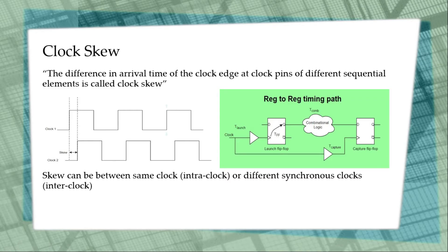Clock skew can be between the same clock at different pins of different sequential elements — this is called intra-clock skew. Clock skew can also be between different synchronous clocks that are completely different. It need not always be for the same clock signal.